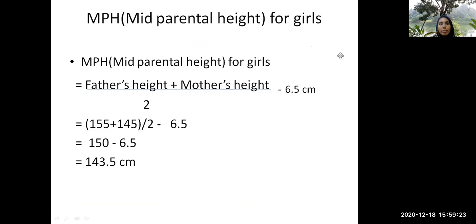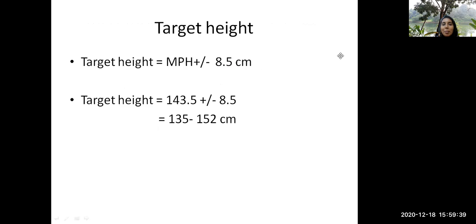So that will account to 155 centimeters plus 145 centimeters by 2 minus 6.5, which is 143 centimeters. So nobody will have just 143 centimeters adult height. No, there will be a range. So that range is actually further determined by our target height.